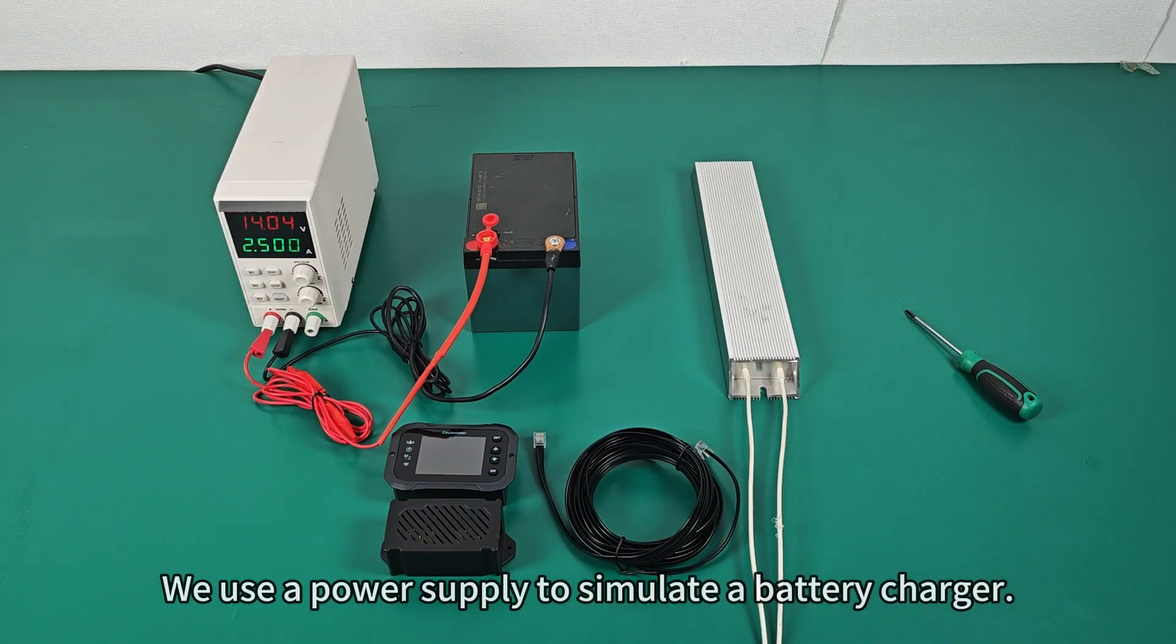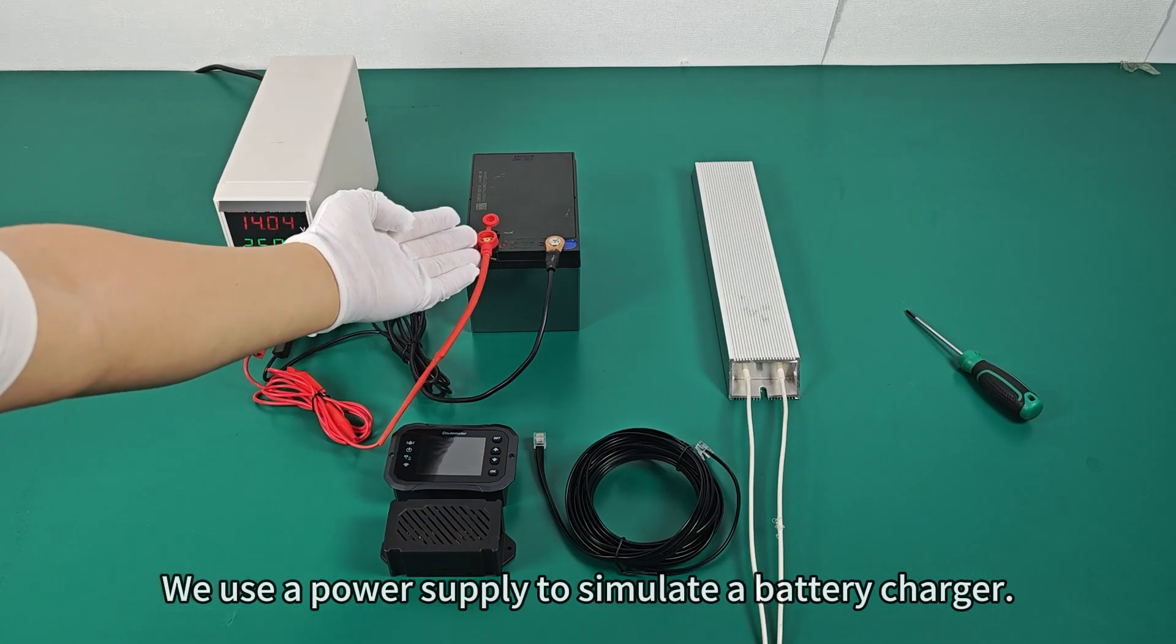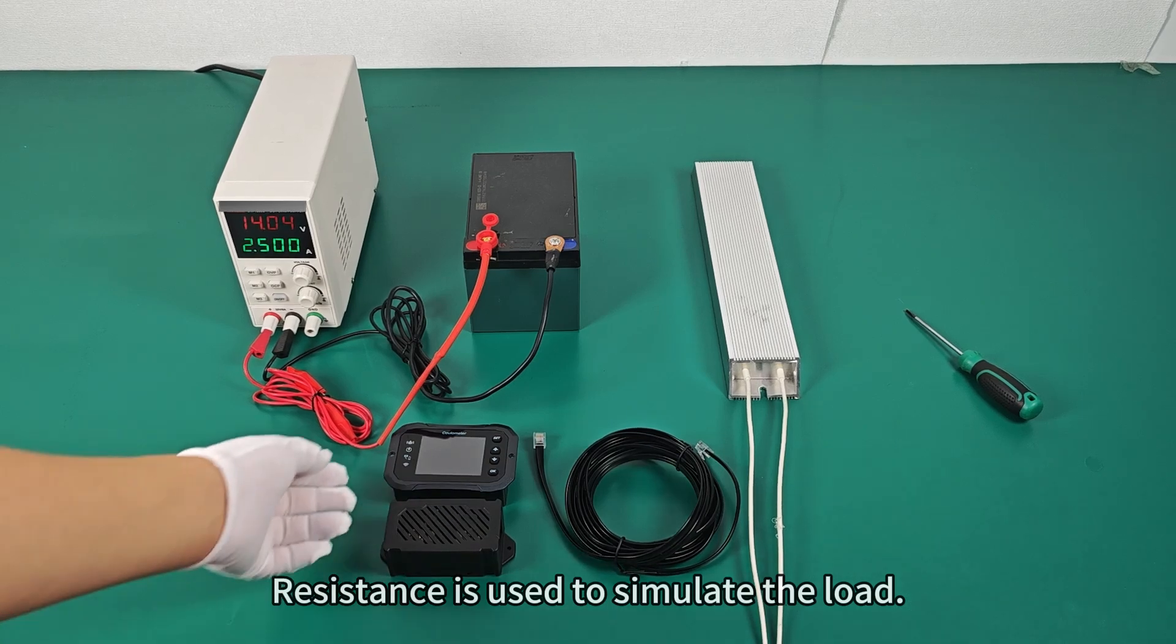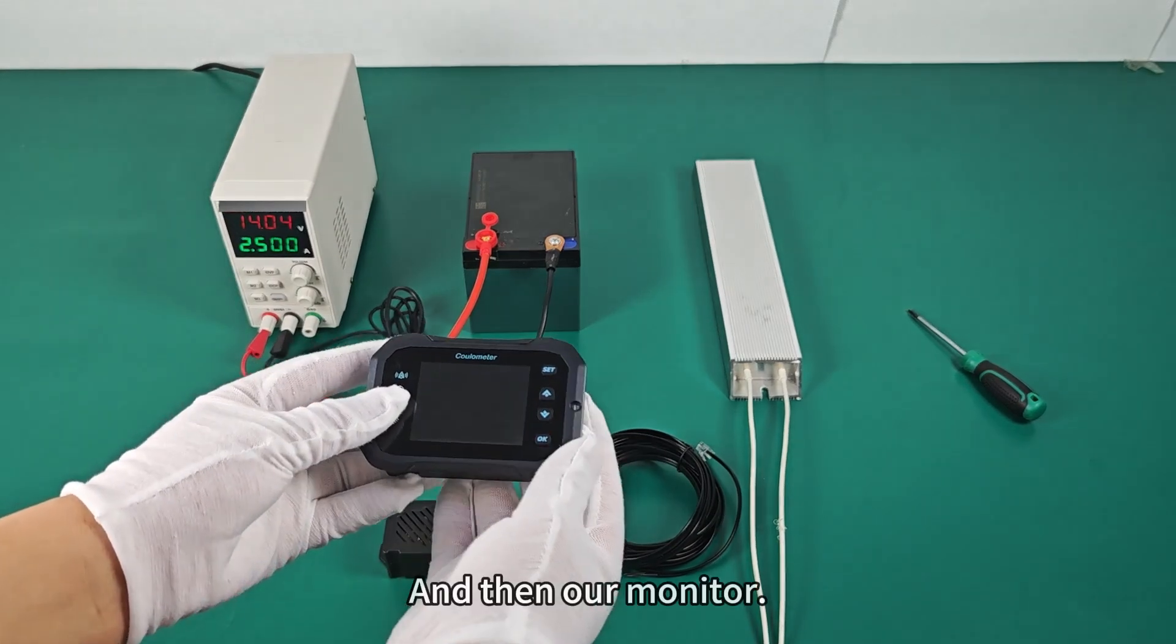We use a power supply to simulate a battery charger. This is our battery. Resistance is used to simulate the load. And then our monitor.